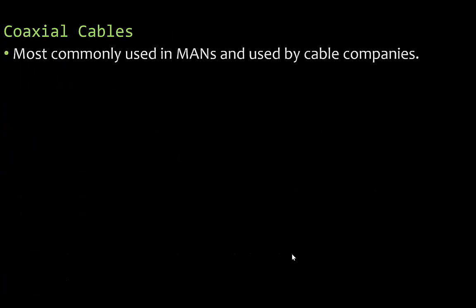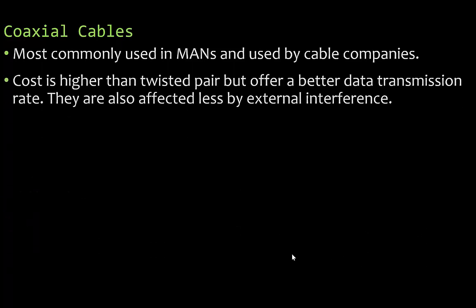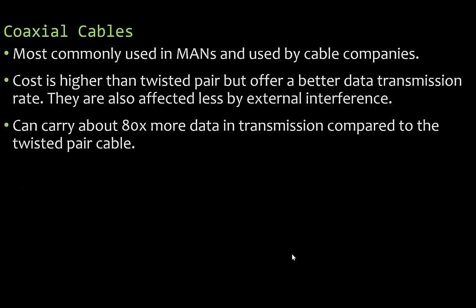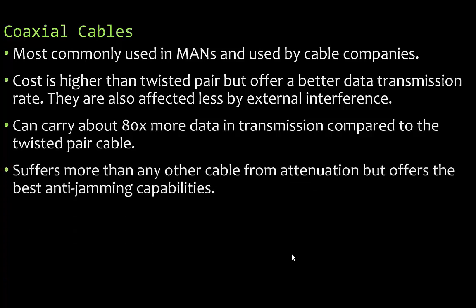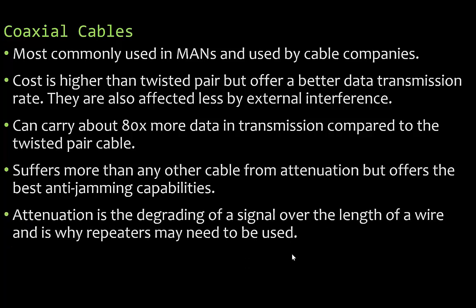Coaxial cables are most commonly used in metropolitan area networks and also by cable companies — more often than not this is what you have in your home. Cost is higher than twisted pair but it offers a better data transmission rate and is affected less by external interference. It can carry about 80 times more data compared to twisted pair. It does suffer more than any other cable from attenuation — the degrading of the signal over the length of a wire — which is why repeaters may need to be used. However it offers the best anti-jamming capabilities.